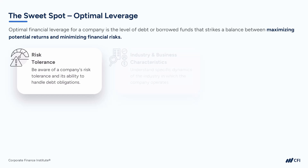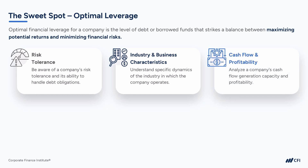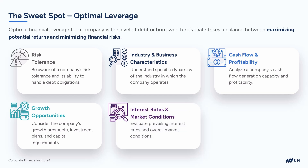We also need to factor in industry and business characteristics, because different industries have varying levels of inherent risk and stability. Understanding the specific dynamics of the industry in which the company operates is crucial in determining an appropriate level of leverage. We also need to factor in cash flows and profitability — analyzing those cash flows to ensure that the company has the capacity to not only service the debt and pay interest payments, but also repay the debt. We need to consider the company's growth opportunities, investment plans, and capital requirements. Companies with significant growth opportunities may be willing to take on more leverage to finance expansion. We also need to think about interest rates and market conditions, evaluating the overall impact of the cost of borrowing and the company's ability to service debt.